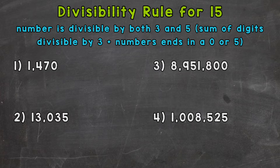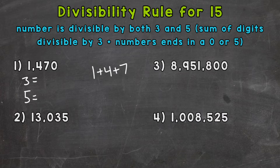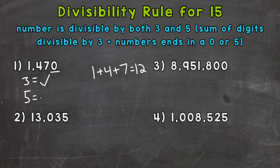So let's jump into number one, where we have 1470. We need to see if it's divisible by three and five. For three, we need to find the sum of the digits. So we add one plus four plus seven plus zero — one plus four is five, plus seven we get 12. 12 is divisible by three; 12 divided by three equals four with no remainder. So 1470 is divisible by three. That number ends in a zero, so it's also divisible by five. Therefore, 1470 is divisible by both three and five, meaning it's divisible by 15 as well.